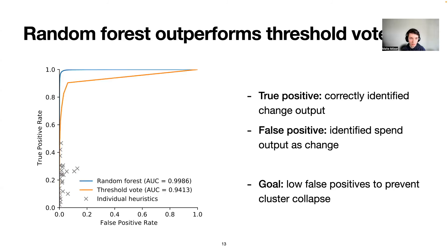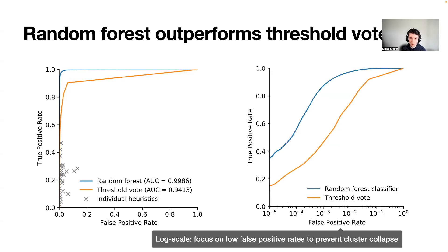Evaluating the performance of these two models, we see that both are quite effective at predicting change, but the random forest clearly outperforms the threshold vote. The plot on the left shows the true positive rate compared to the false positive rate at different thresholds. A true positive means we correctly identified a change output; a false positive means the classifier identified the spend output as the change. Our goal is to get very low false positives while still detecting a large number of change outputs to prevent cluster collapse. Plotting the low false positive rates on a log scale, the random forest classifier detects as many as twice the amount of change outputs at those low false positive rates.